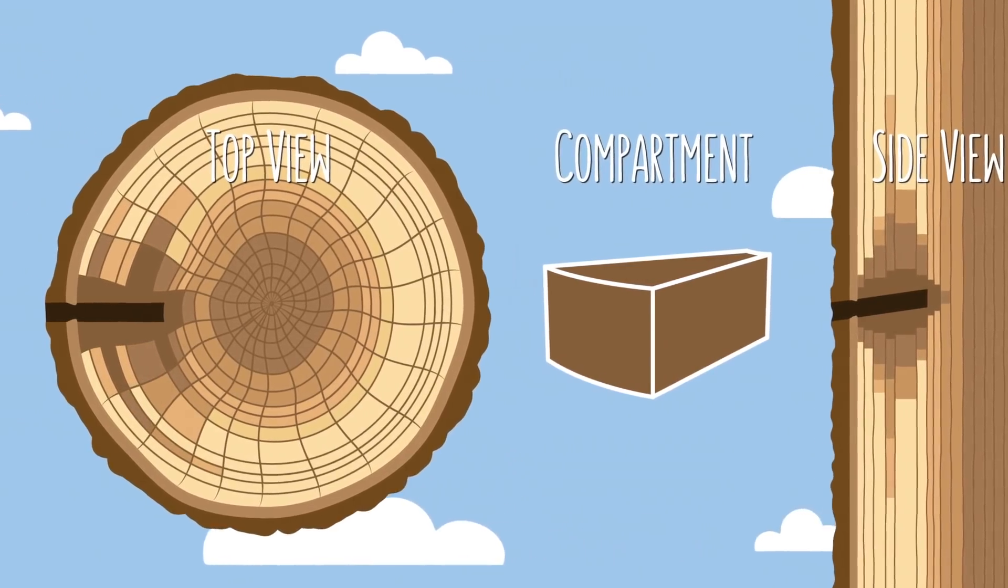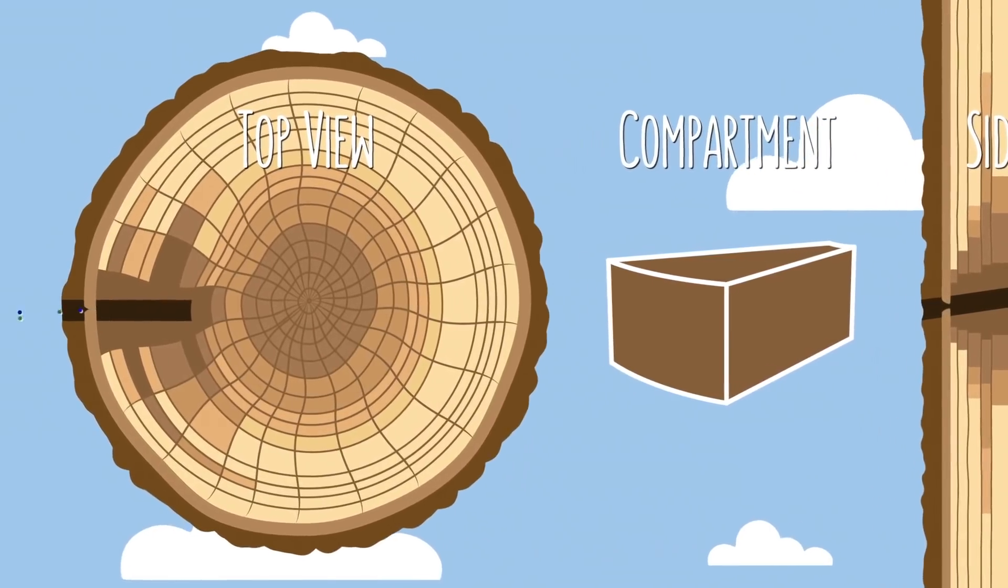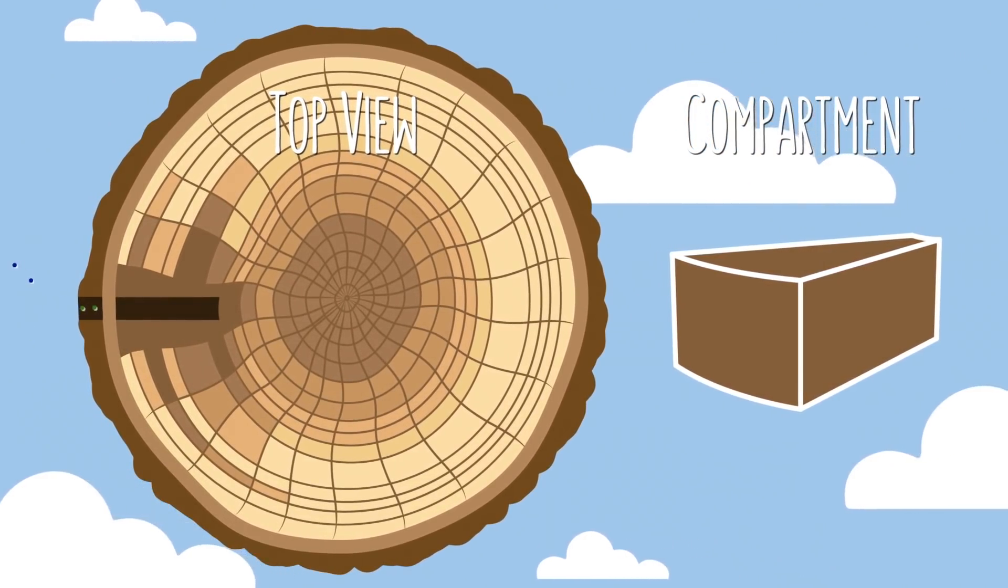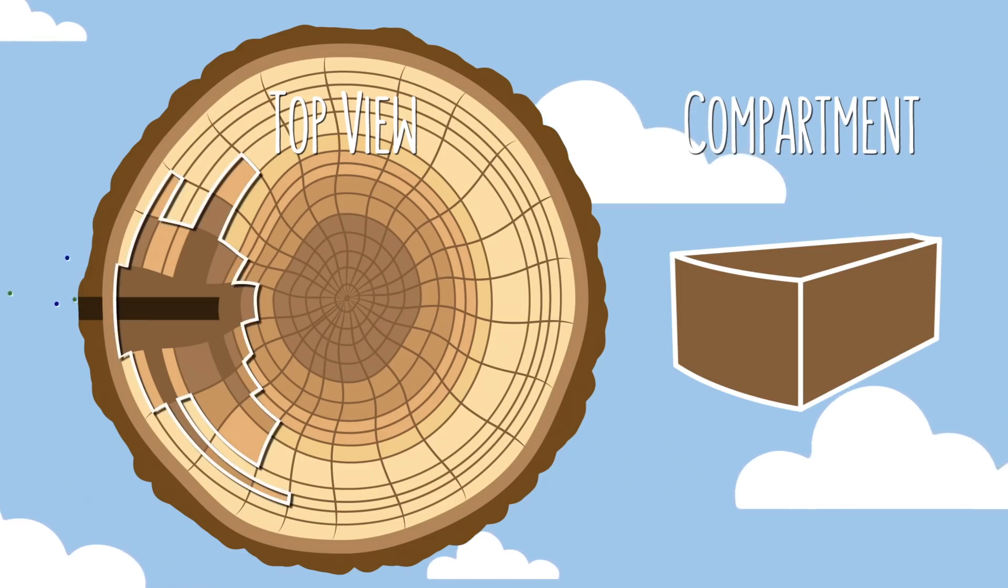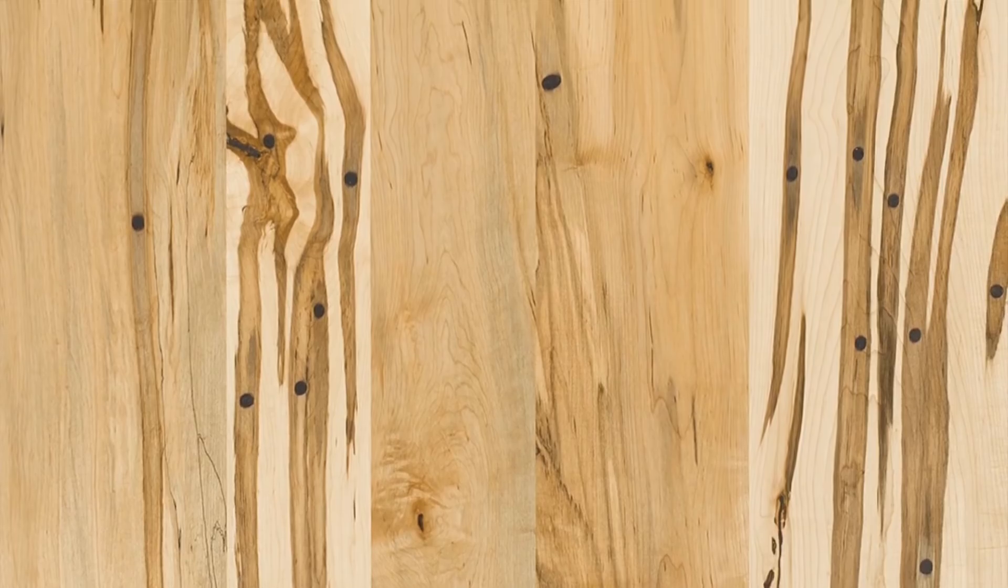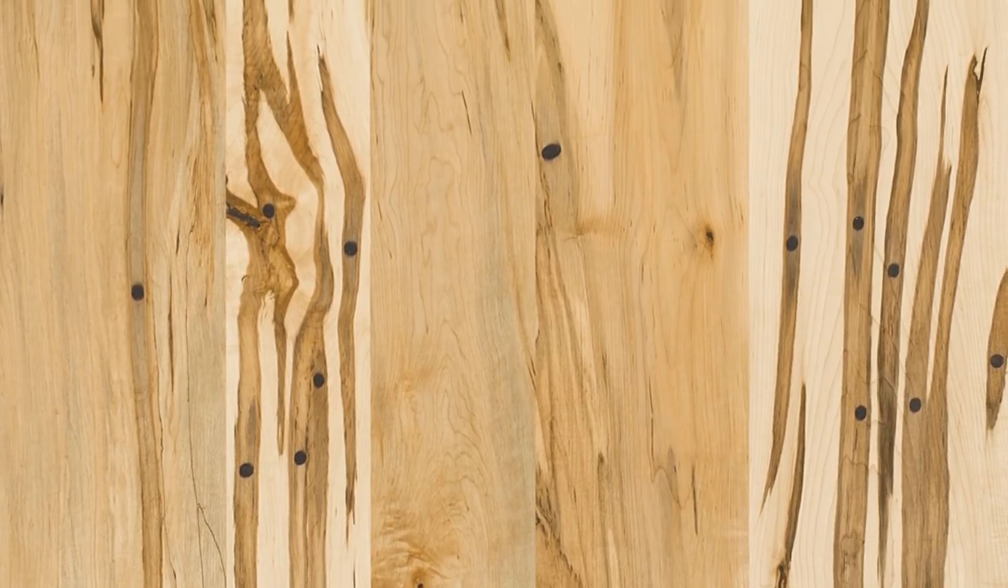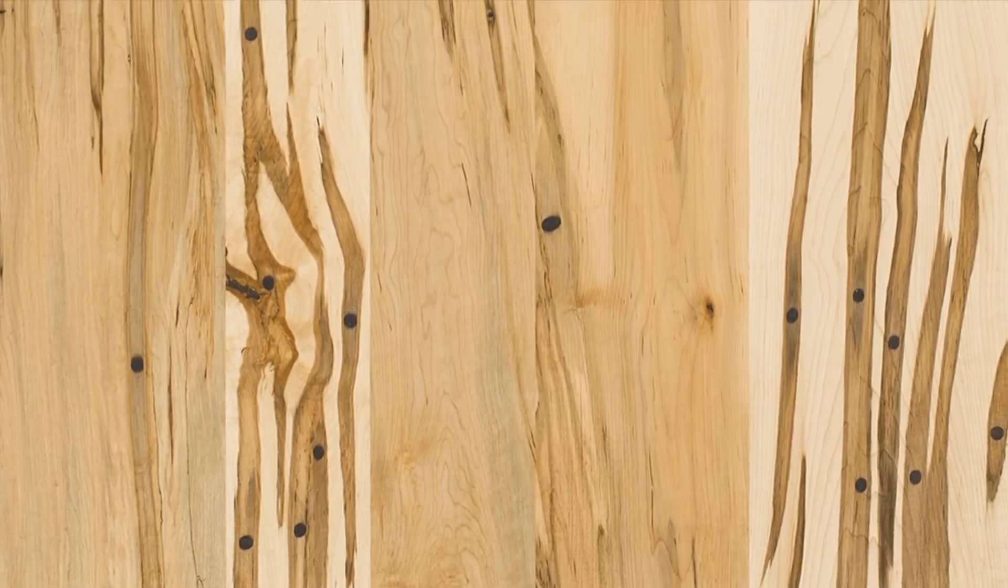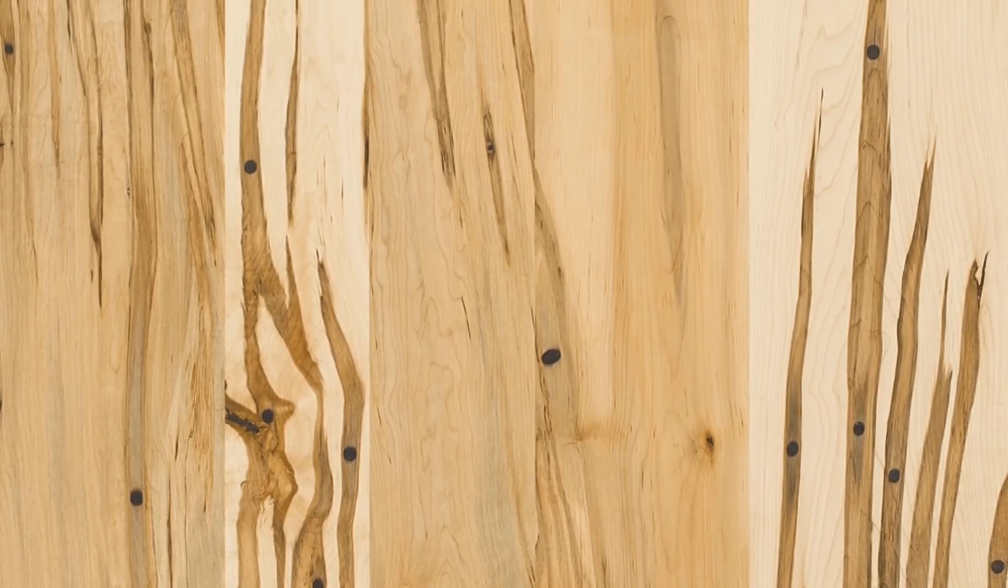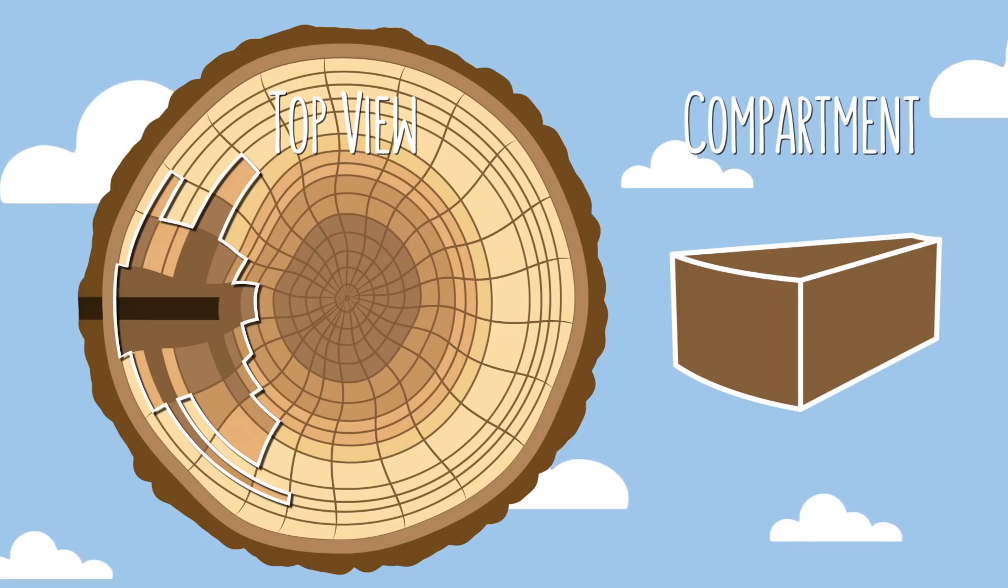So assuming the wound was small enough and the infection was weak enough, by the time the cambium seals off the opening, the tree will have isolated the decay to a collection of discolored compartments. And this is why maple trees that have been tapped throughout their lives tend to produce such attractive grain patterns in their lumber. The darker wood is actually the result of spreading decay and the tree's chemical response.